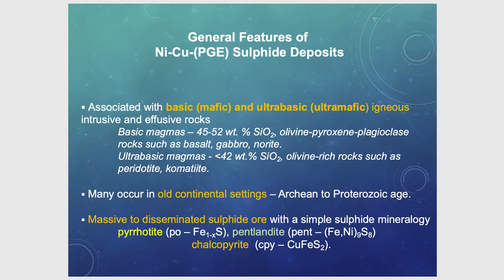Voisey's Bay in particular has troctolitic units containing quite a bit of mineralization — on the order of 30 percent sulfide in some units. Many deposits occur in old continental settings, connected with ultramafic assemblages that are Archean or Proterozoic in age, as expected given that layered ultramafic complexes are most abundant and best preserved in the inner parts of continents. We have a variety of textures commonly related to fractionation processes and the flow of magma.